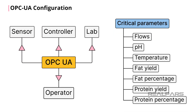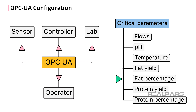Critical parameters that can be collected through OPC UA connections from these various data sources include flows, pH, temperature, fat yield, fat percentage, protein yield, and protein percentage.